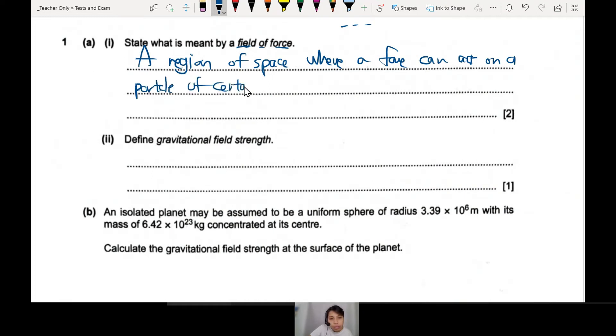Of certain property - what property? Could be mass if it's a gravitational field, could be charge if it's an electric field. Different things. Where do the two marks come from? First one: region of space where a force can act on a particle. Then probably property. This one has two marks - one mark here, one mark here.